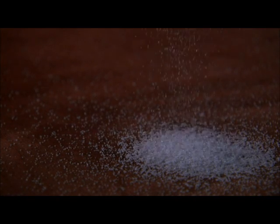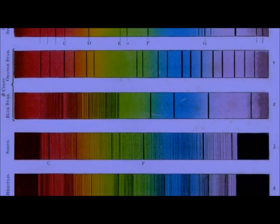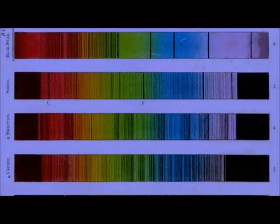For example, ordinary table salt generated a bright yellow spectra. Furthermore, not all the colors of the rainbow appeared. There were dark gaps in the spectrum. In fact, for some materials, there were just a few patches of light.